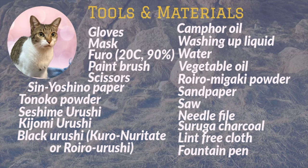For cleaning and polishing, you need camphor oil, washing up liquid, water, vegetable oil, Roilo Migaki powder, sandpaper, one inch for 1200 and 1500 grit, a saw, needle file, Sudoka charcoal, fountain pen from the last tutorial.